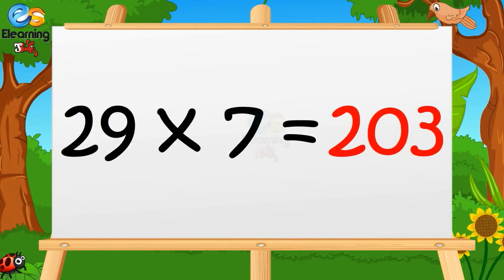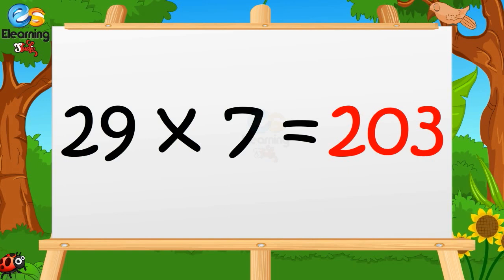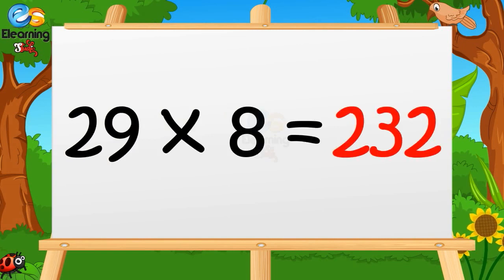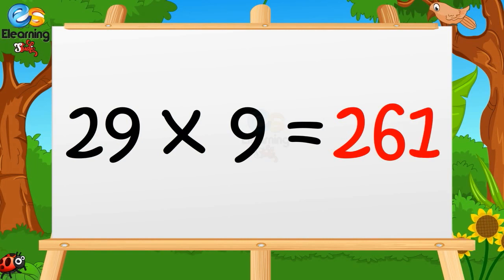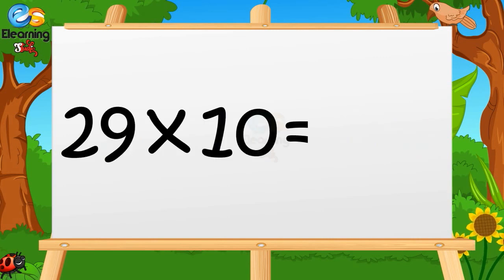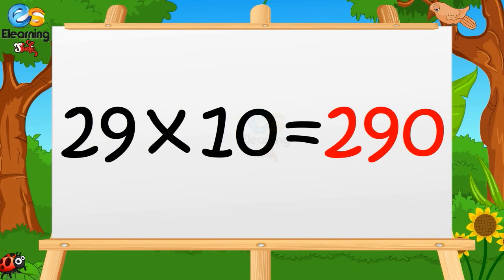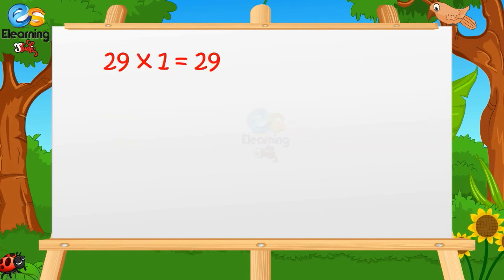29 sevens are 203. 29 eights are 232. 29 nines are 261. 29 tens are 290. 29 sixes are 174. 29 sevens are 203. 29 eights are 232. 29 nines are 261. 29 tens are 290.